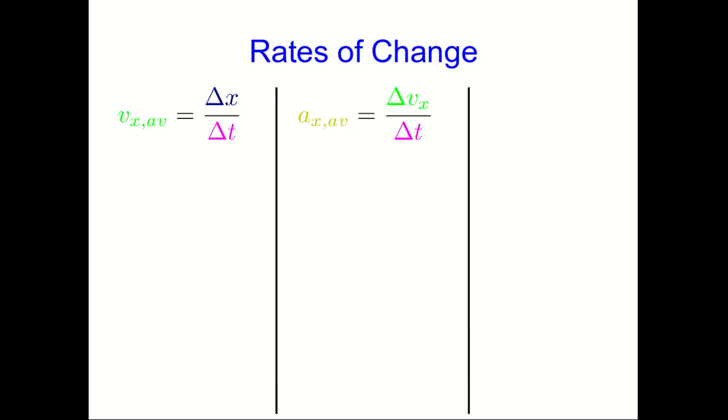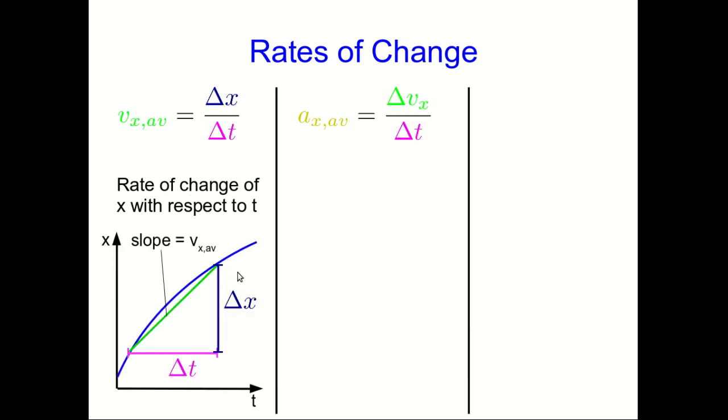I think it's worth stopping at the moment and just noting a pattern that we're seeing. We had a vxav, an average x component of velocity, which we could get by a delta x over delta t. And you can think of that as a rate of change of x with respect to t. In other words, for every unit change in t, how much does x change? That's the rate of change. Well, you can also think of it as a rise over a run. A rise delta x divided by a run delta t. And then you're thinking of it as a slope on the x versus t graph, connecting two points. That's not necessarily the slope of the curve you're interested in. It's a slope of a line connecting the two points.